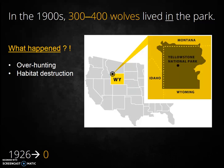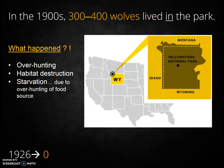Also habitat destruction — cutting down trees to build farms limited the wolves' habitat. Third, starvation, as humans in the area overhunted the wolves' primary food sources: elk, deer, and bison. In fact, gray wolf populations were completely extirpated from the entire western United States by 1930. Zero wolves.